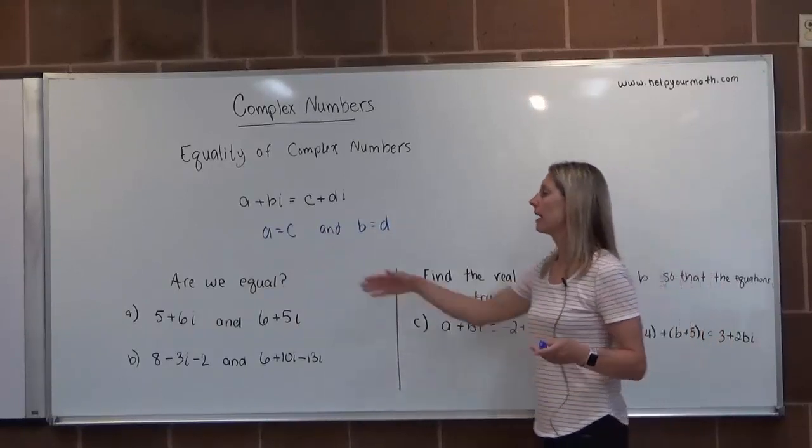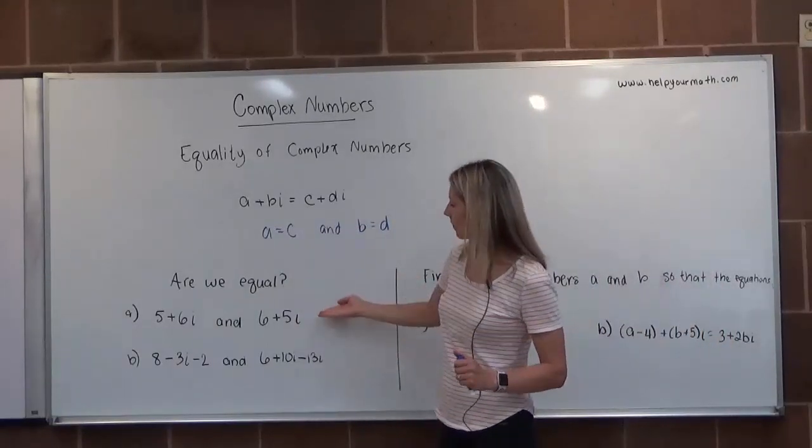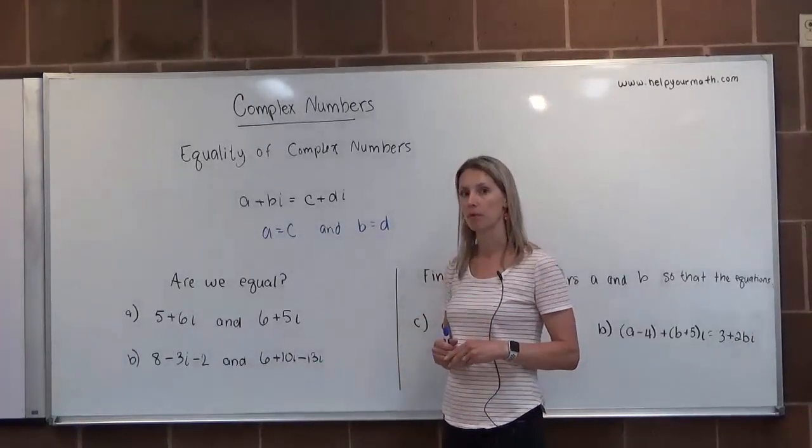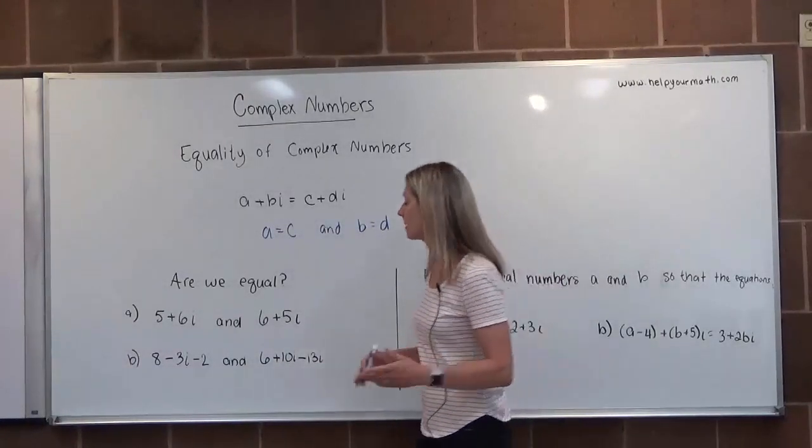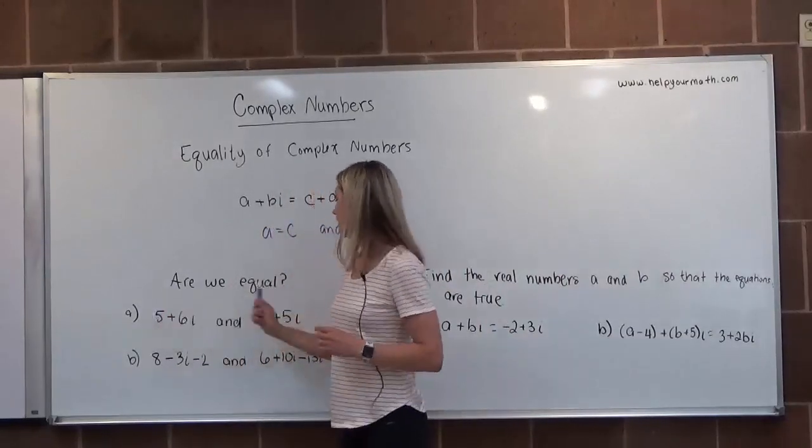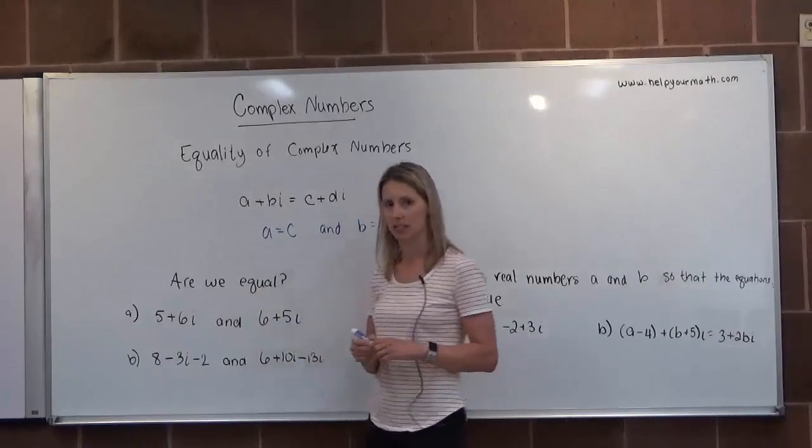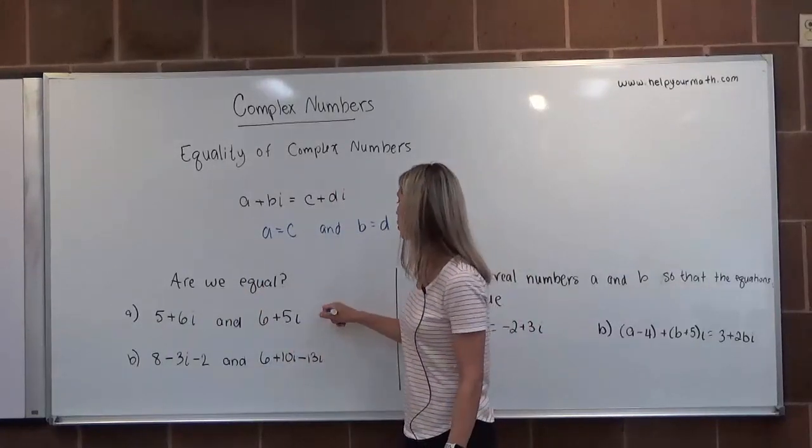First, let's look at: are we equal? Here we're given 5+6i and 6+5i. Are those two numbers equal? No, they are not, because in order for them to be equal, 5 would have to equal 6, which it's not, and 6 would have to equal 5, which it's not.